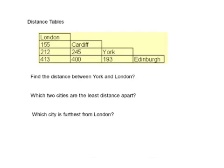If I wanted to do the correct calculation and find the distance between York and London, I would read straight across from York, then read straight down from London, and where my two lines cross, the box it's in gives me the answer. In this case it's 212.